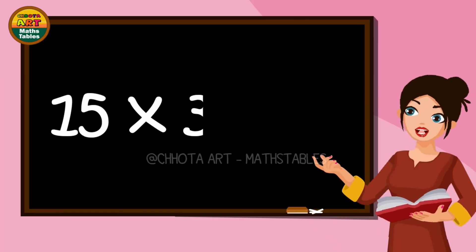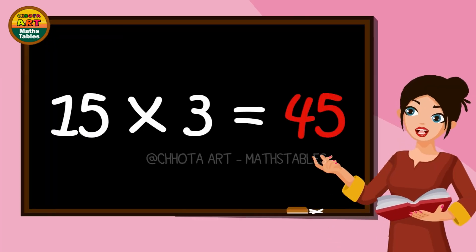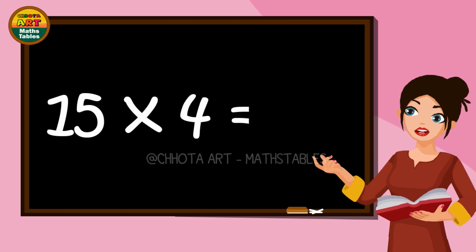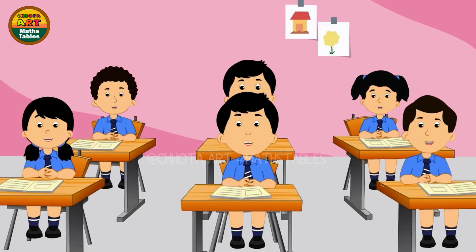Fifteen threes are forty-five. Fifteen fours are sixty.